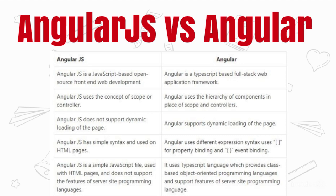The syntax and structure may differ for different kinds of bindings in Angular. AngularJS uses simple syntax on HTML pages. In Angular, we use different expressions and syntaxes — for one-way binding a normal square bracket is used, for two-way binding both a square bracket and a normal open-close bracket are used, for property binding a square bracket is used, and for event binding a normal open-close bracket is used.